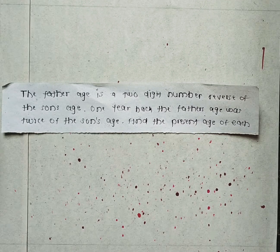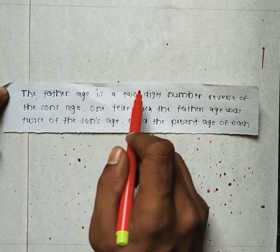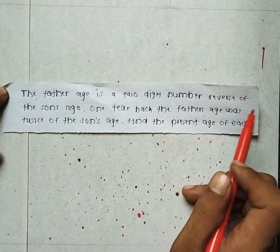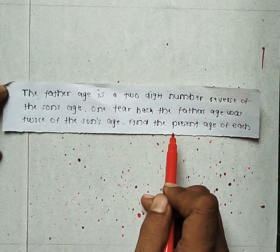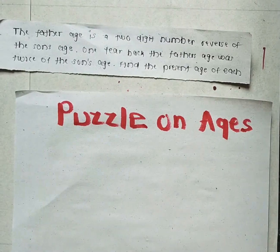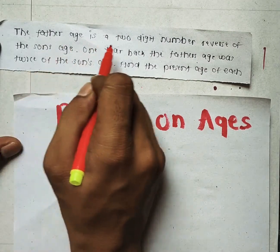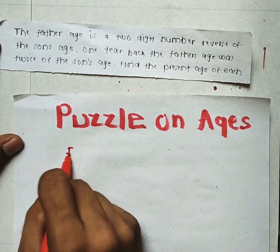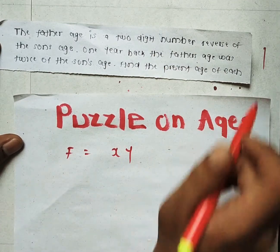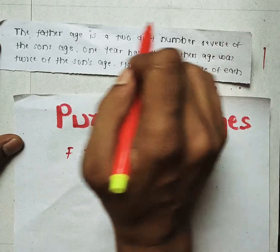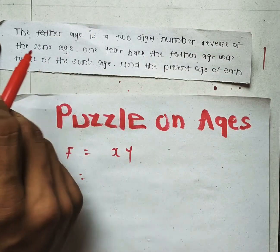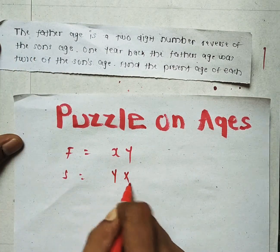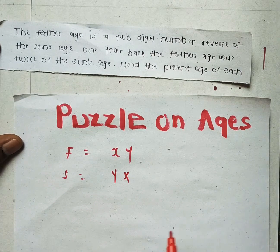The question is: the father's age is a two-digit number, and it is the reverse of the son's age. One year back, the father's age was twice the son's age. Find the present age of each. The father's age is XY — a two-digit number — and the son's age is the reverse, YX.